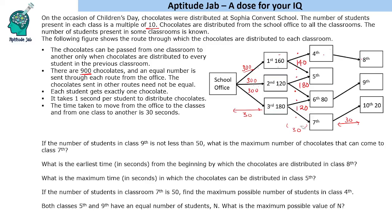The question asks for the maximum chocolates coming to class 7th, with class 9th having at least 50 students. One mistake people can make is to minimize all classes to 10 and compute a maximum of 260, but class 7th receives chocolates only from one route with a combined maximum of 120. So we cannot have 260 chocolates distributed here — that logic does not apply.